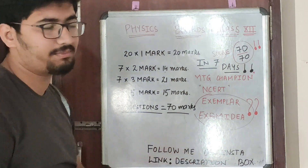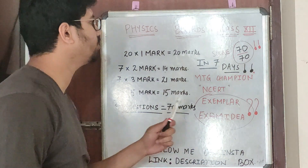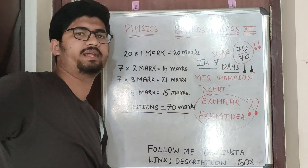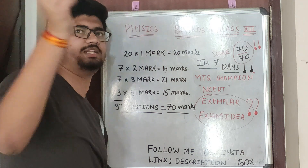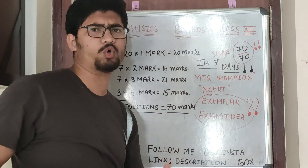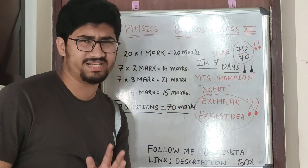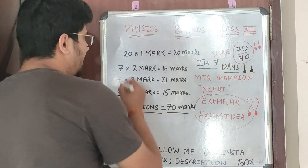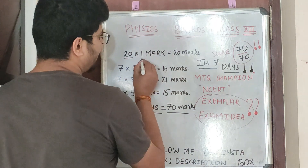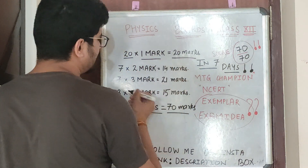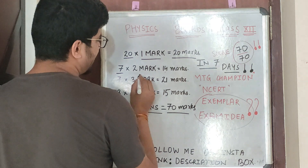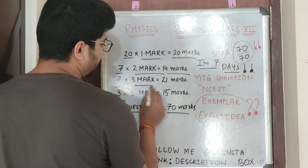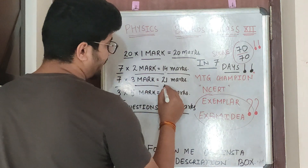Before we discuss the marking scheme, just a quick note. In the marking scheme, 20 questions are going to be 1 mark, that's 20 marks. Then 7 questions are going to be 2 marks, that's 14 marks. And 7 questions are going to be 3 marks, that's 21 marks.